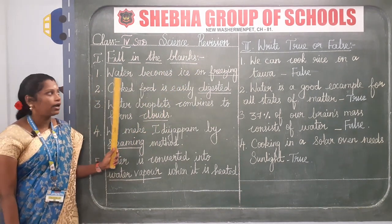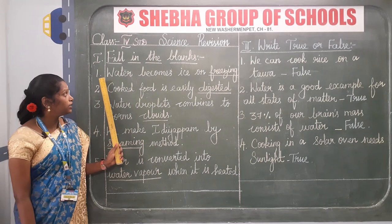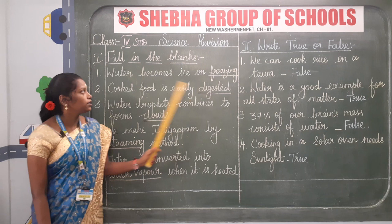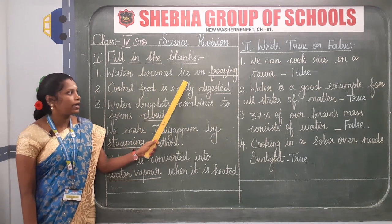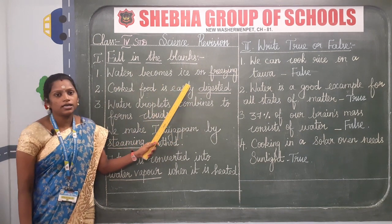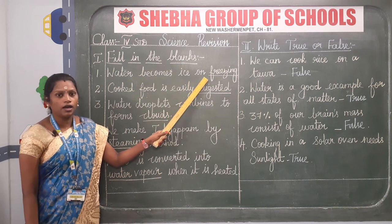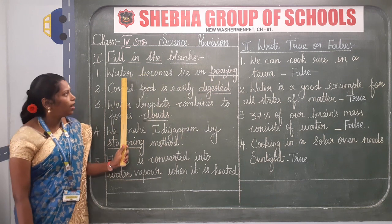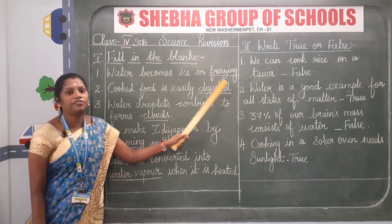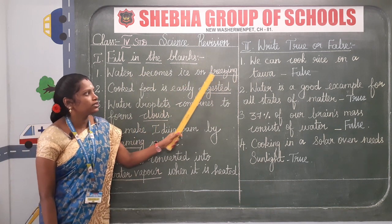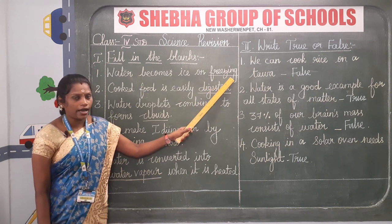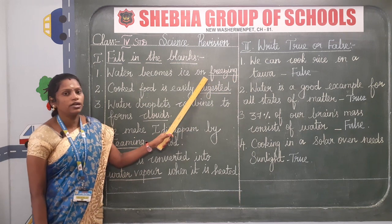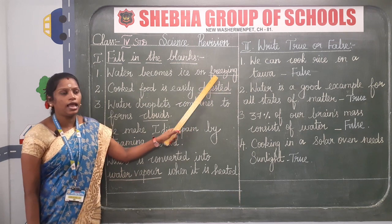After finishing this, leave one line. Write number one inside the module. Water becomes ice on blank — when we are freezing. Water becomes ice on freezing. The spelling of freezing is F-R-E-E-Z-I-N-G. After finishing the answer, underline using scale and pencil.